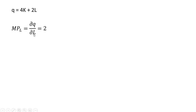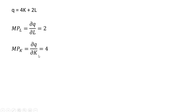Here's our first production function. To get the marginal rate of technical substitution, we're going to first get the marginal product of labor — the partial derivative of the production function with respect to labor. The partial derivative of 2L with respect to labor is just 2. Then the marginal product of capital is going to be another partial derivative, and in this case it's just 4.